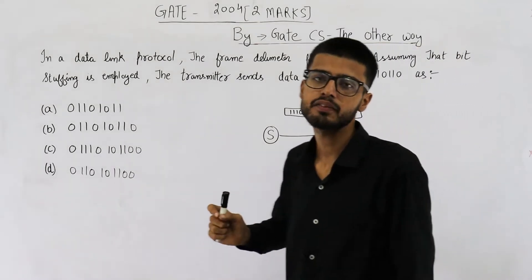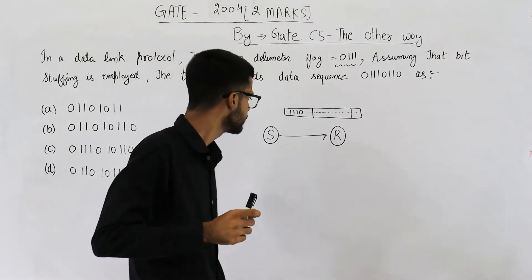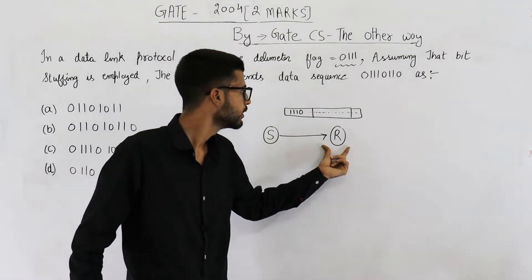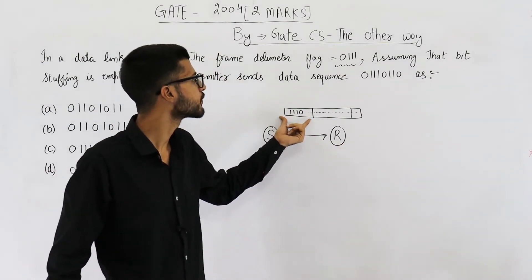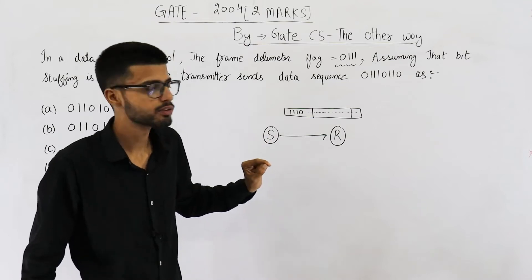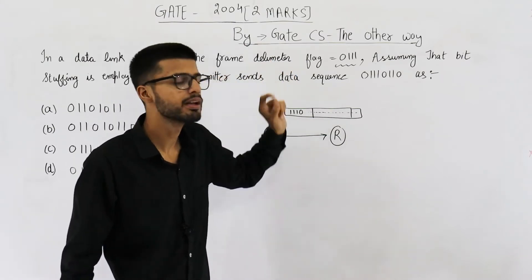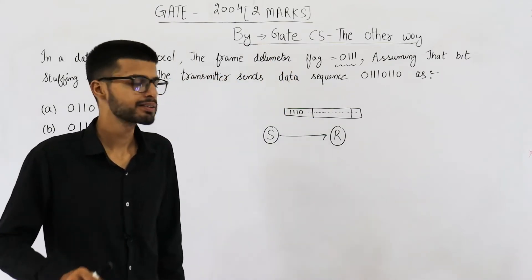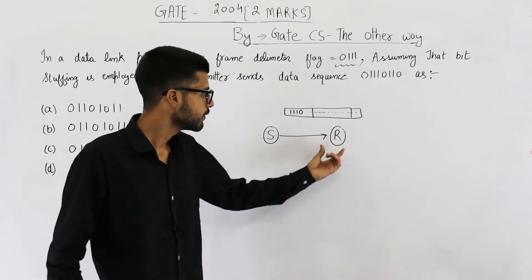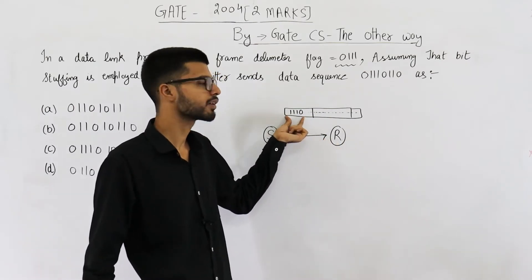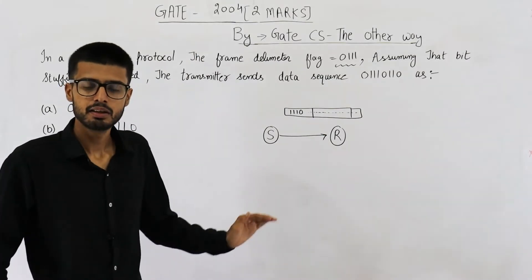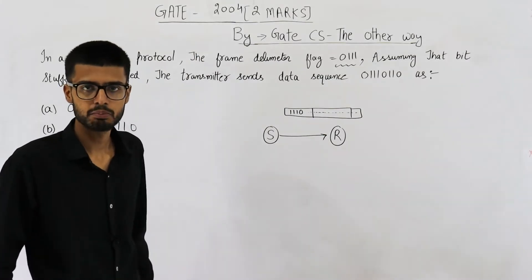So what is a frame delimiter flag? Whenever a sender sends some frame to a receiver, it is going to end the frame with the pattern 01110, which is called the frame delimiter flag. Its purpose is to indicate that the frame has ended. Whenever the receiver sees 01110, it knows that one frame has ended and the next frame might begin.